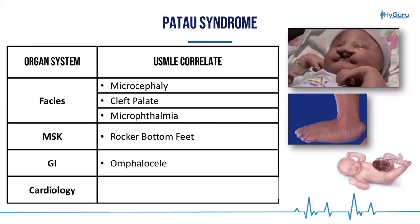From a GI standpoint, you're going to have an outpouching of the peritoneum covered by the peritoneal membrane — that's known as omphalocele. From a cardiac standpoint, you're going to have VSD and PDA.